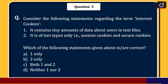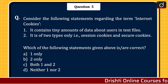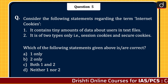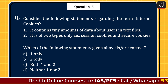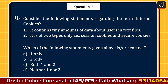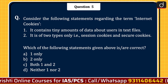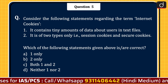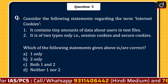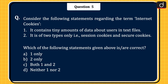The next question: consider the following statements regarding the term internet cookies. Statement 1: it contains tiny amounts of data about users in text files. Statement 2: it is of two types only, i.e. session cookies and secure cookies. Which of the statements is or are correct? 1 only, 2 only, both 1 and 2, or neither 1 nor 2. The correct answer is option A, 1 only.